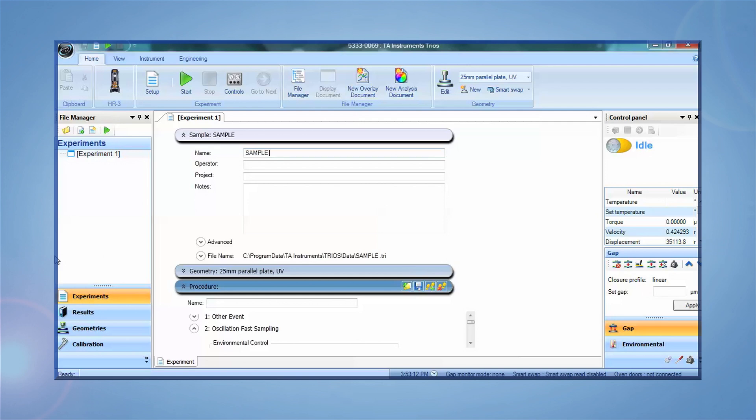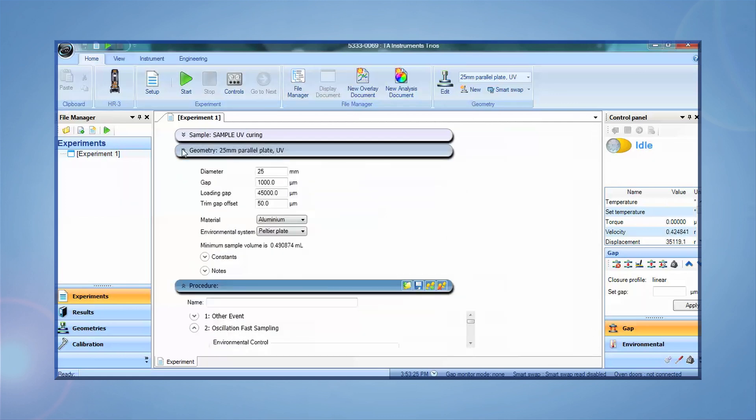Next, it's best to set up the experiment prior to loading the sample. We introduce the sample name, the path, and where the experimental file will be stored. Check that everything is okay in the geometry window and then set up the experiment.